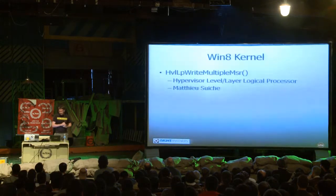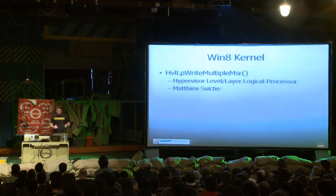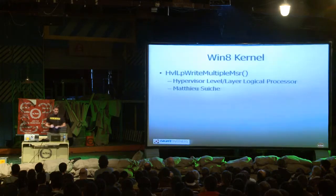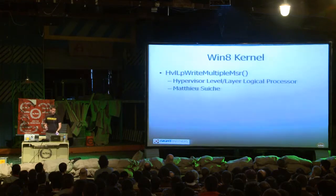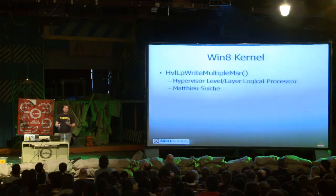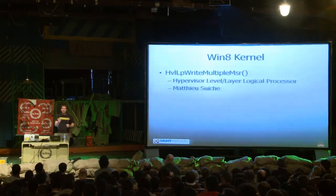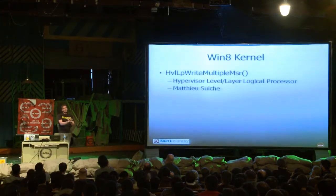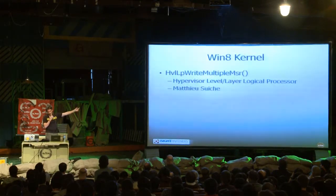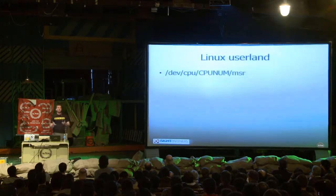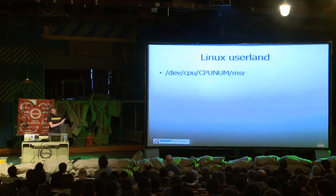In Windows 8, I got an email a couple days ago from a French researcher reversing the kernel: they have support to write to multiple MSRs, given that Windows 8 has the Hyper-V hypervisor built in. My speculation is they'll only allow certain MSRs to be read and written to — probably a restricted set. In Linux, there's a device per CPU you can simply read from and write to. This is nothing new; it's just going over common stuff.